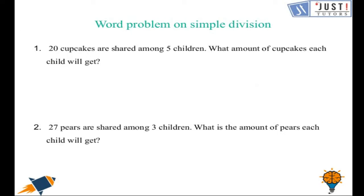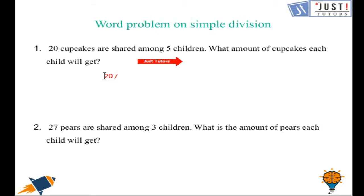Now let's discuss word problems based on simple division. Twenty cupcakes are shared among five children. What amount of cupcakes will each child get? We need to divide the number of cupcakes by the number of children — twenty divided by five — and we get four cupcakes each.